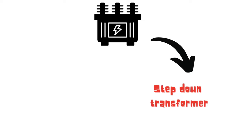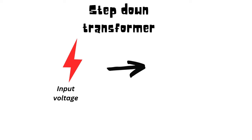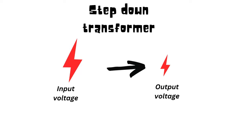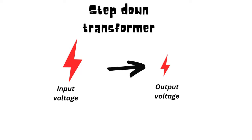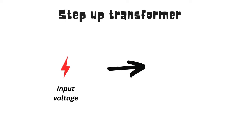Step Down transformer and Step Up transformer. In the Step Down transformer, we can look at input voltage and output voltage. In the Step Up transformer, we can see the output voltage increase.